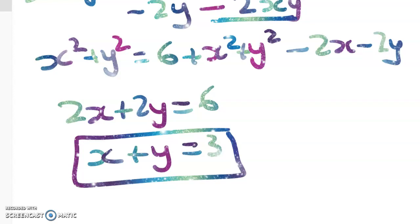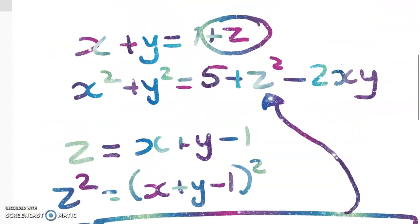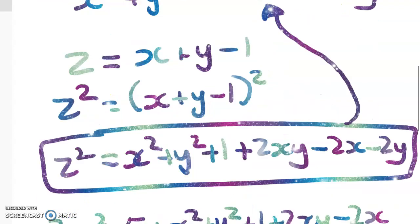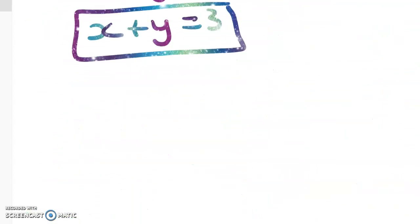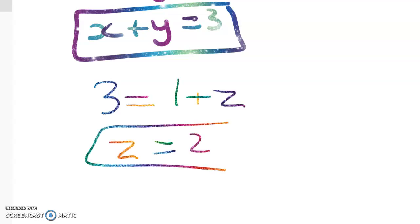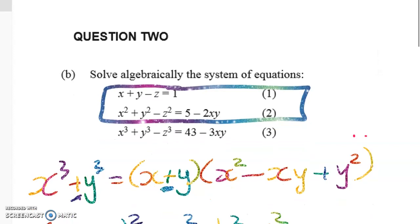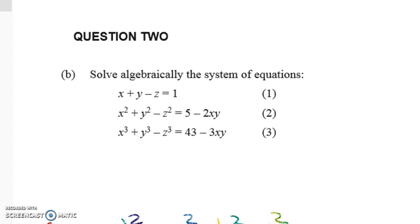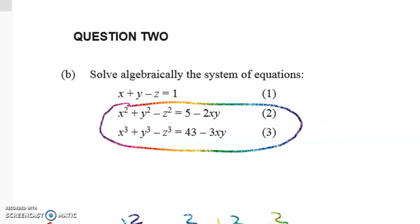Now we should feel like we're getting somewhere. What do we know about x + y and z? Back in equation 1 we have x + y = 1 + z. So 3 = 1 + z, giving z = 2. Now we can substitute z = 2 back into the remaining equations wherever we see z, and then solve those two equations in two variables.